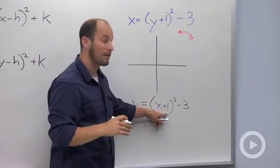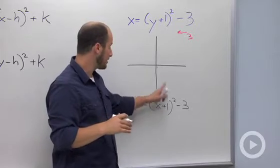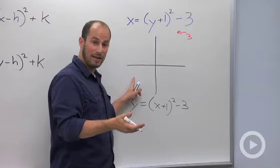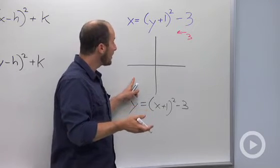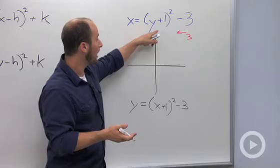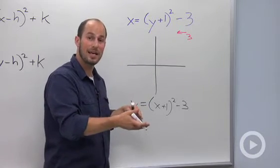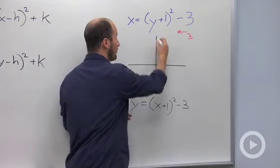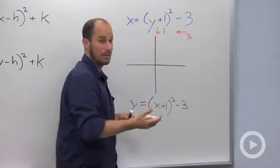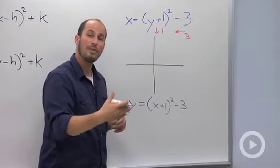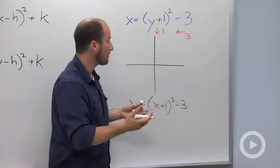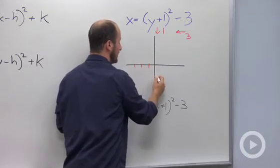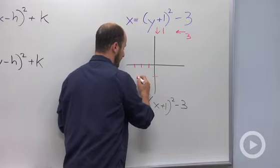Similarly, the x plus 1 is going to move our x-coordinate of our vertex back 1 for a vertical parabola. On a side-to-side parabola, it's going to move the y back 1, which means making the y 1 smaller or moving it down 1. We don't have any coefficients to make this steeper or wider. So our vertex is back 3 and down 1.